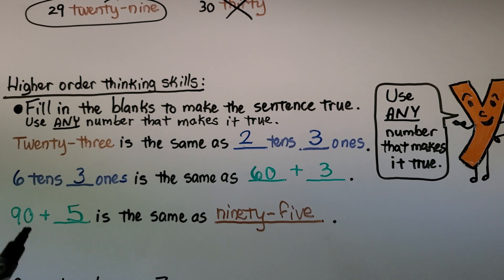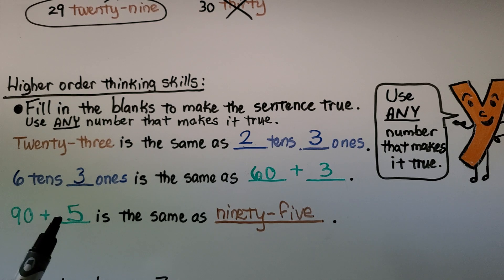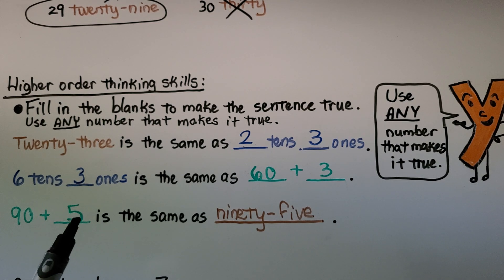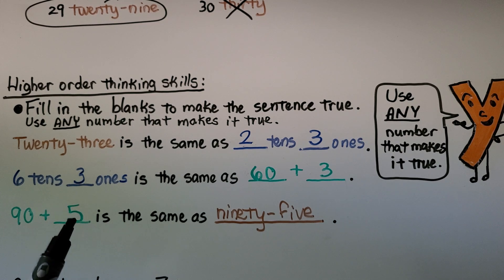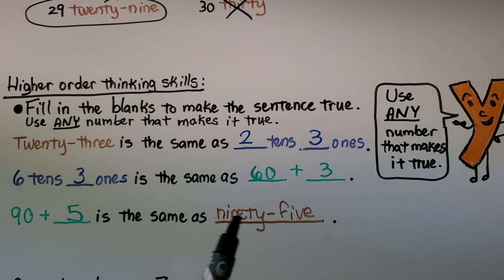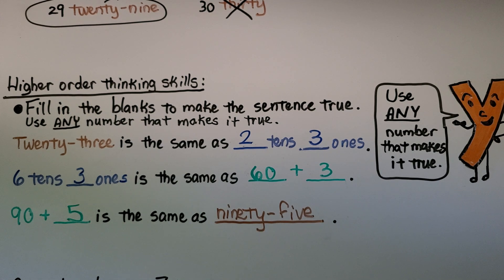I could have put a zero, one, two, three, four, six, seven, eight, or nine — as long as I wrote the word correctly with the hyphen.